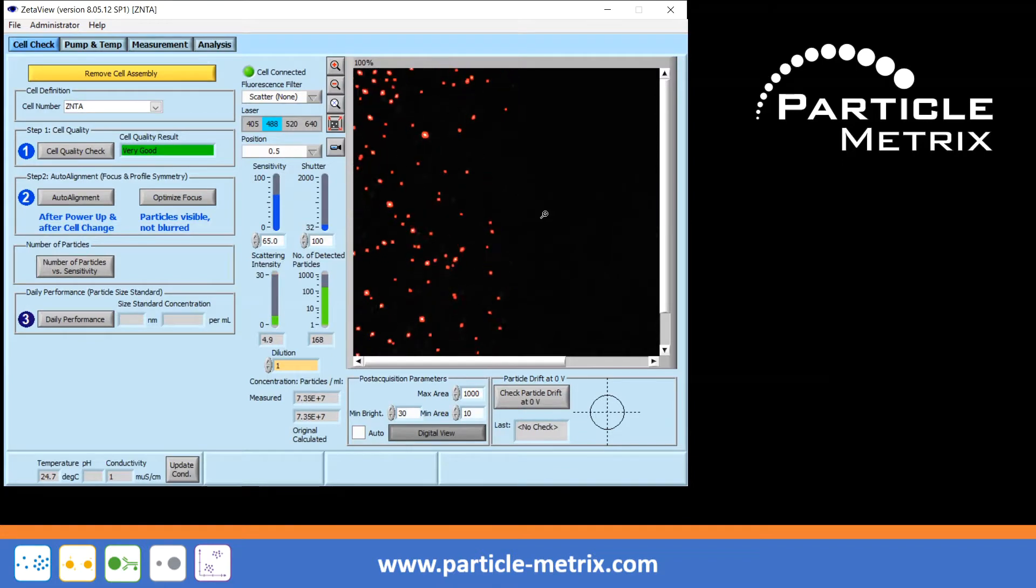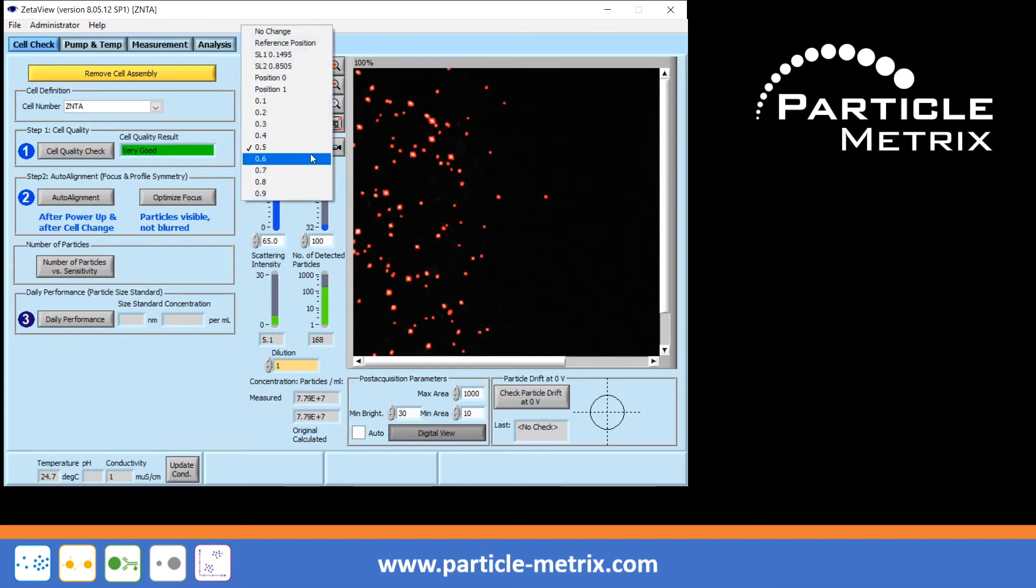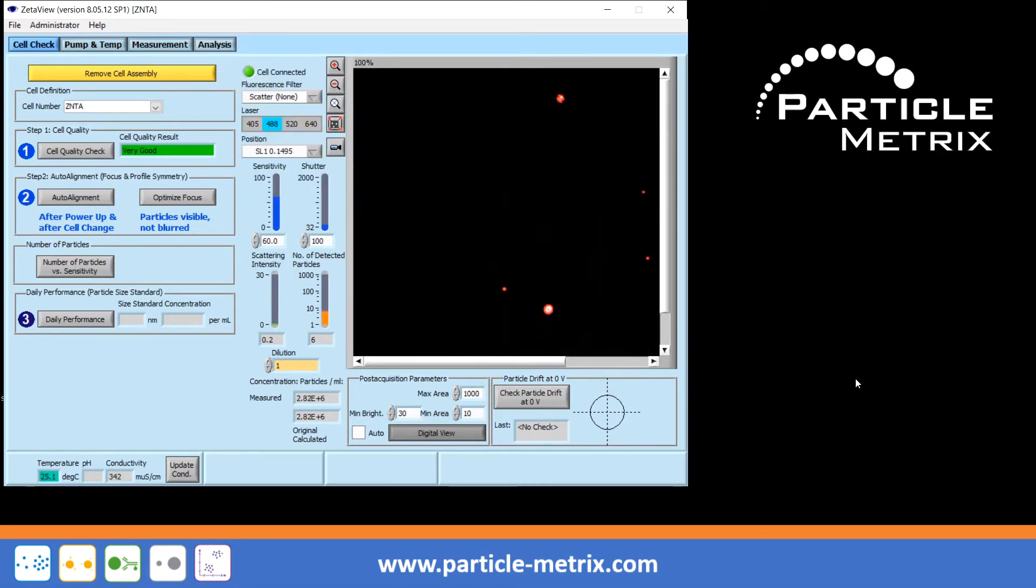If the field of view is only half filled with particles, this may also be an indication of an air bubble in the measuring cell. In addition to a reduced or insufficient number of particles, air bubbles that cannot be seen in the field of view can also cause drift problems.